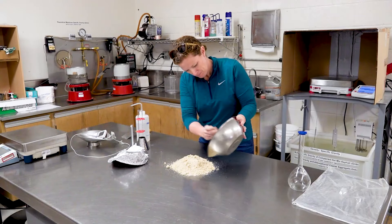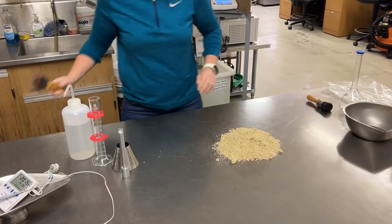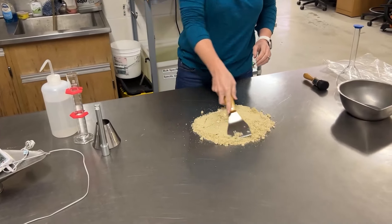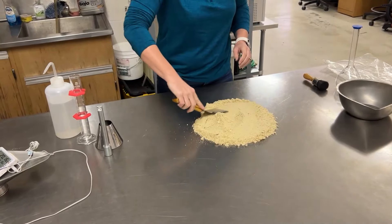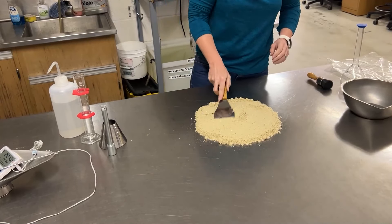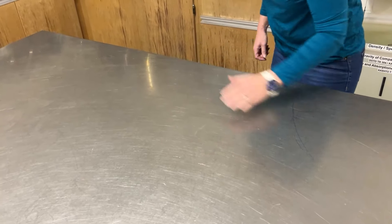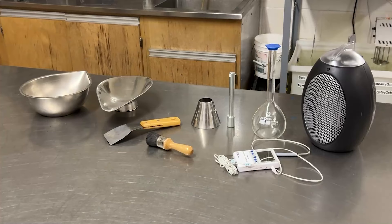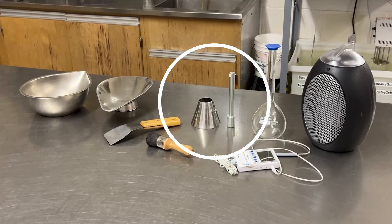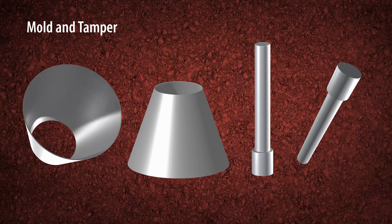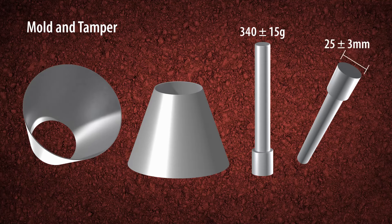Testing fine aggregate for specific gravity and absorption is unique in that it is done in two steps. First, we must test it to make sure that it is in the SSD condition. To begin this step, you will need a flat, non-absorbent surface, a mold, and a tamper. The tamper weighs 340 grams plus or minus 15 grams, while the tamping face must be round and flat with a diameter of 25 millimeters plus or minus 3 millimeters.